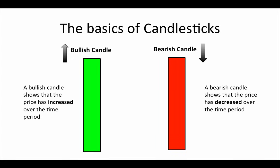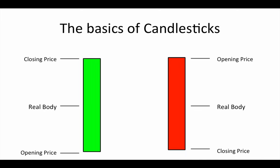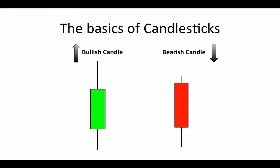Within the candles themselves we can garner more information. The fat rectangular part of any candle is known as the real body. What the real body shows us is the specific price action relating to the opening and the closing price. For the bullish candle, the bottom of the candle body shows the opening price and the top of the candle body shows the closing price. Bearish candles are reversed — the top of the body is the opening price and the bottom is the closing price, since a bearish candle is displaying a price decrease.